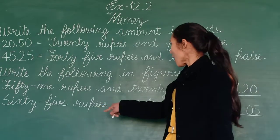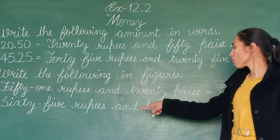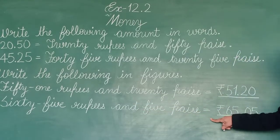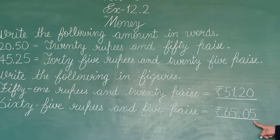Next one is sixty-five rupees and five paise. How to write? Rupees 65.05 paise.